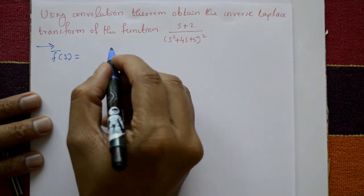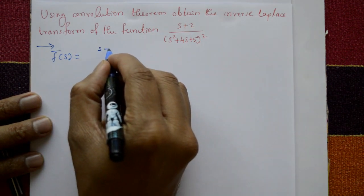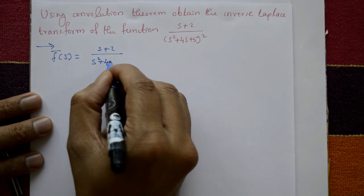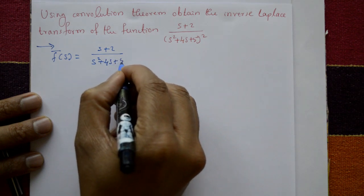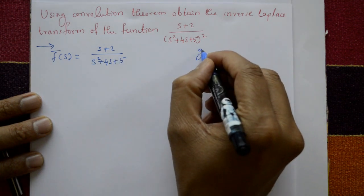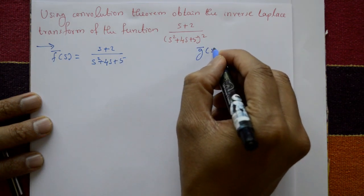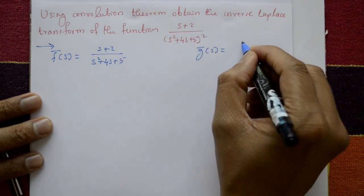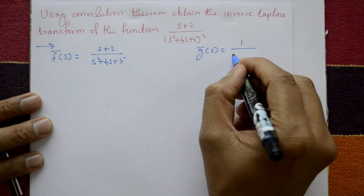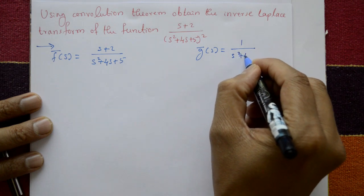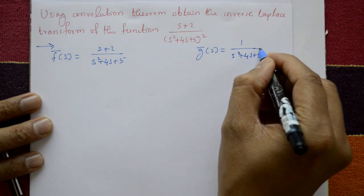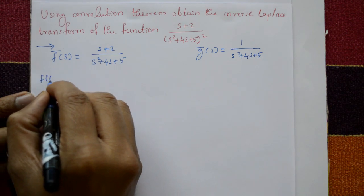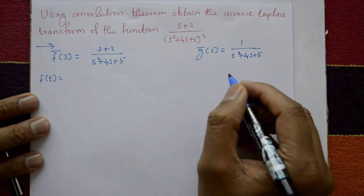First, take f̄(s): f̄(s) = (s + 2) / (s² + 4s + 5), and ḡ(s): ḡ(s) = 1 / (s² + 4s + 5).